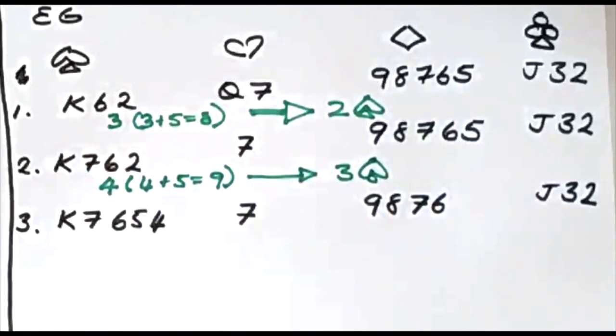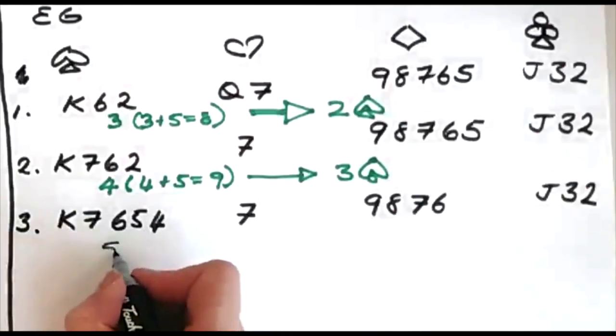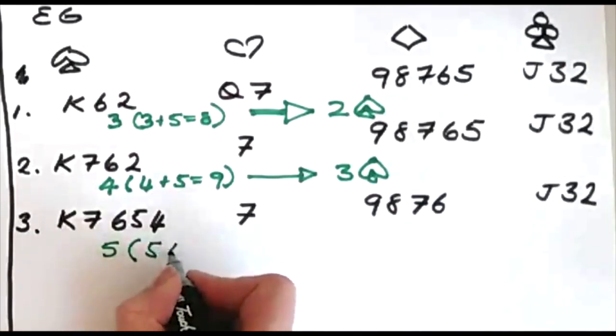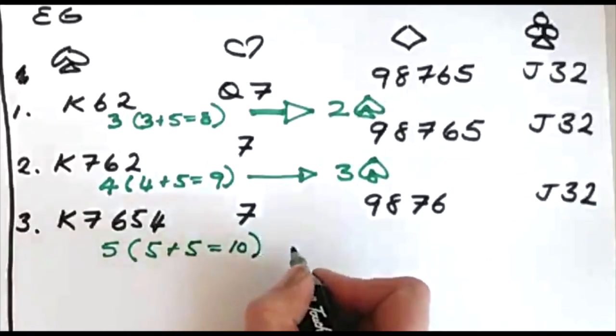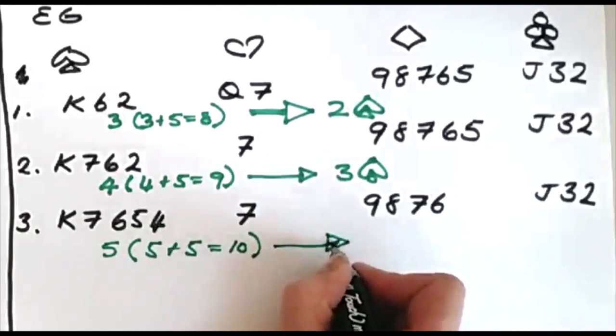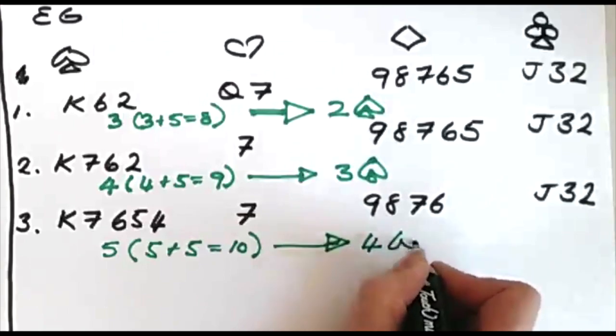In the last example, you have five spades. Five plus at least five from your partner gives you a minimum of ten between you, so when you jump to the level of fit, you jump to four.